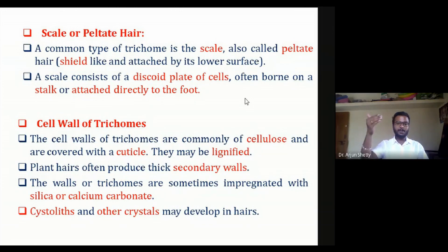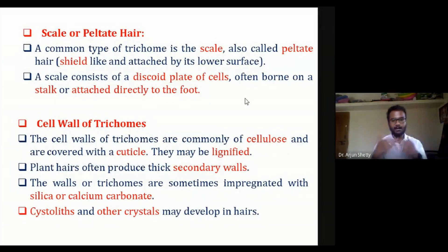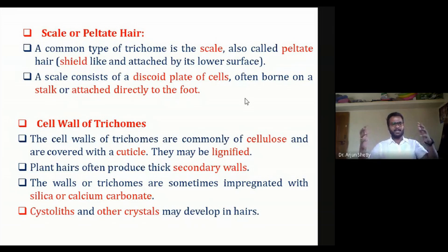When the plant undergoes secondary wall formation, trichomes may also have secondary wall deposition. Secondary wall formation involves lignification, meaning trichomes can undergo secondary thickening with the help of lignification, similar to other plant cells. Some components found in trichomes include silica crystals and calcium crystals.